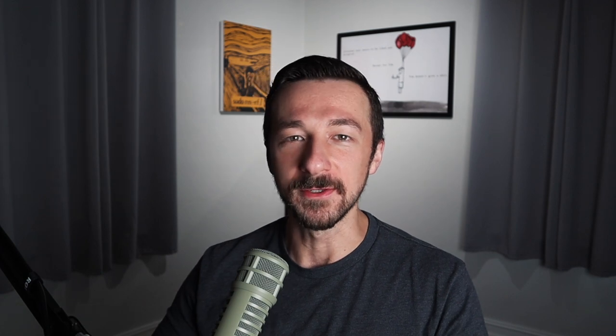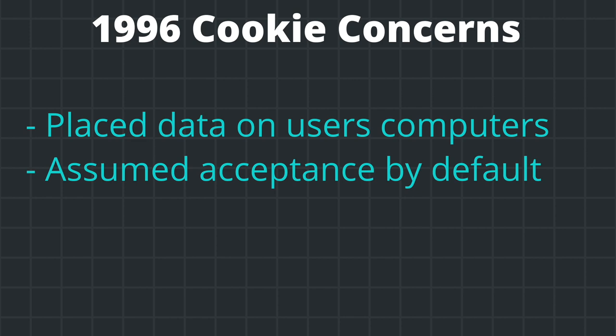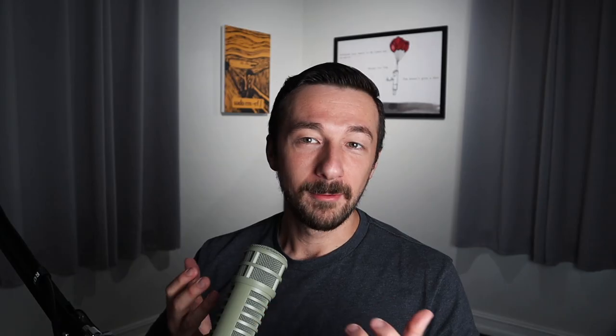But back to cookies. The first use of a cookie by Netscape was to determine if a user had visited the site previously. Not much was known about cookies at the time, and they were just silently pushed out to users. On February 12th, 1996, the Financial Times published an article about them. This is when cookies started to gain a lot of attention, specifically for their potential privacy implications. The main reasons for concern were that Netscape placed data on users' computers, they assumed acceptance by default, and users received no notification. Kind of ironic that 26 years later, the cookie struggle continues.